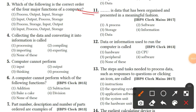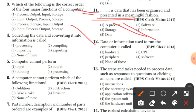Question 11: data that has been organized and presented in a meaningful fashion is called information. Option 4, information, is the right answer.